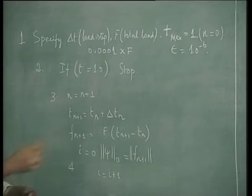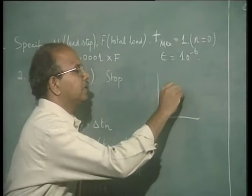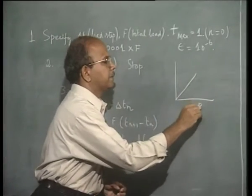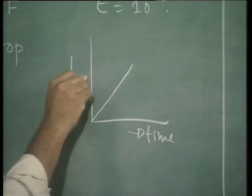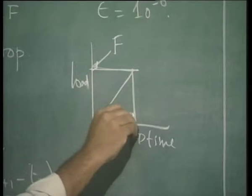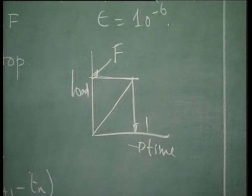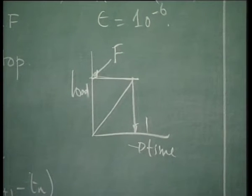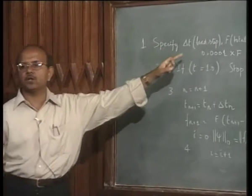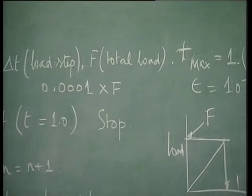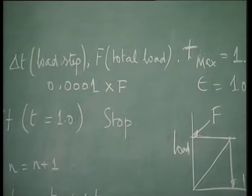There is a distribution between time and load. The total load F is reached when time equals 1. When I say the initial time step is 0.001, what I mean is the first load applied is that fraction multiplied by the total load I have given.